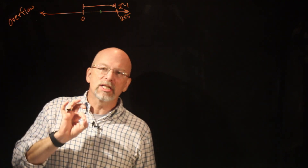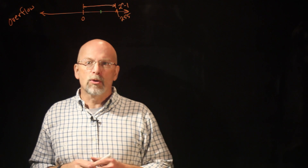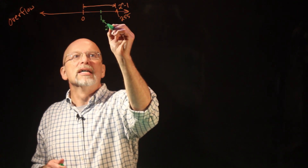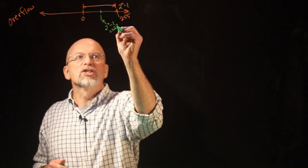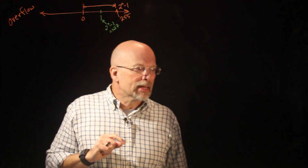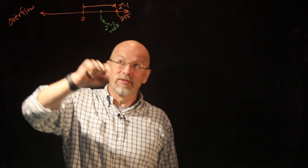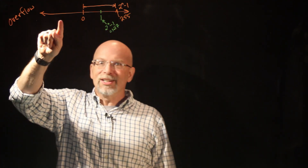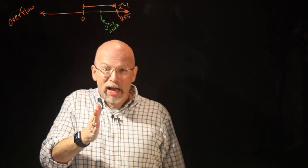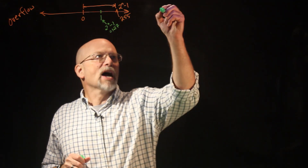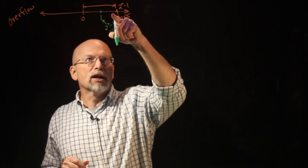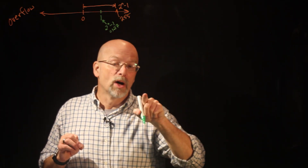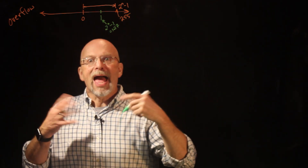In two's complement, remember that most significant bit has a special purpose — it is our sign bit. That point right there is two to the seventh minus one, or 127. That's where we shift from positive numbers, where two's complement maps exactly to unsigned binary, to suddenly shifting to a negative value, because now that one is in the most significant bit position. So in eight bits, the value 0111 1111 is 127. When we add one to that, we get 1000 0000.